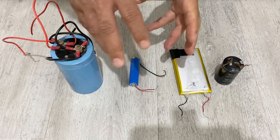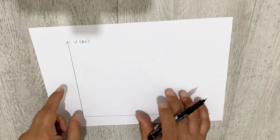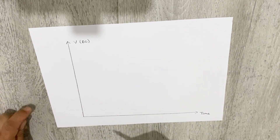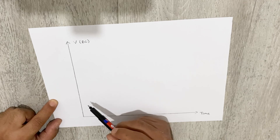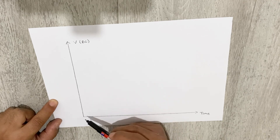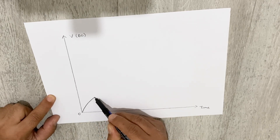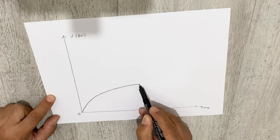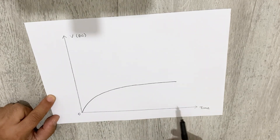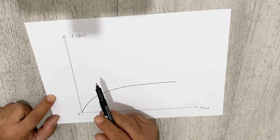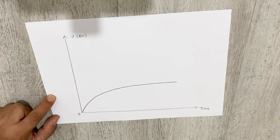Now I'm going to show you the charging and discharging curves for batteries, super capacitors, and electrolytic capacitors. Starting with the battery charging curve: when you charge a rechargeable battery, it charges quickly at first, then stabilizes and charges more slowly — starting fast and then slowing down. The axes are voltage DC and time. Note that capacitors and batteries work with DC, not AC.